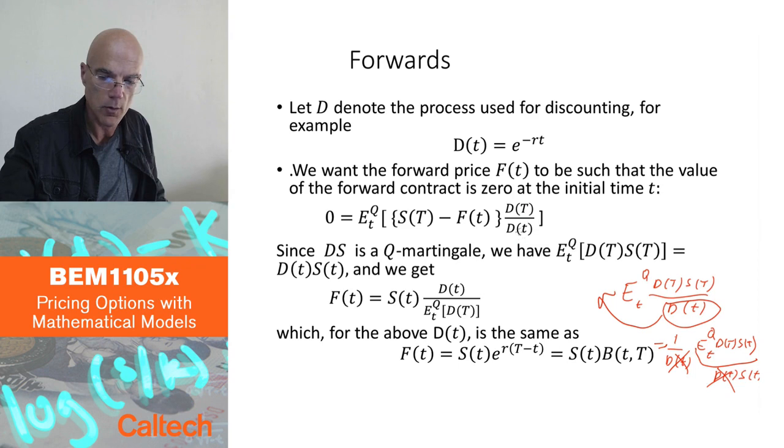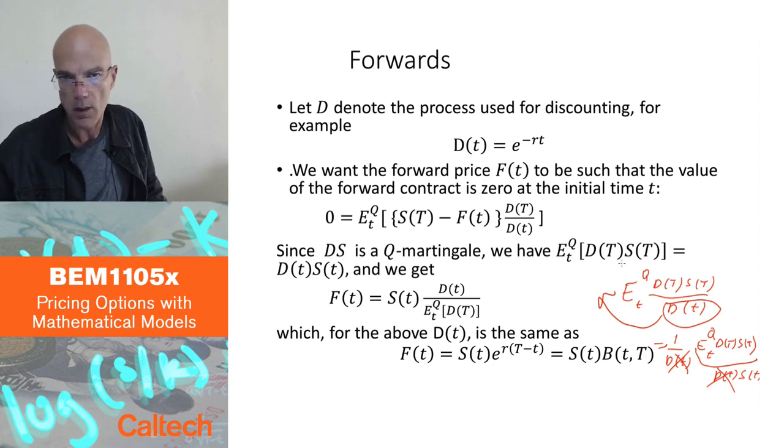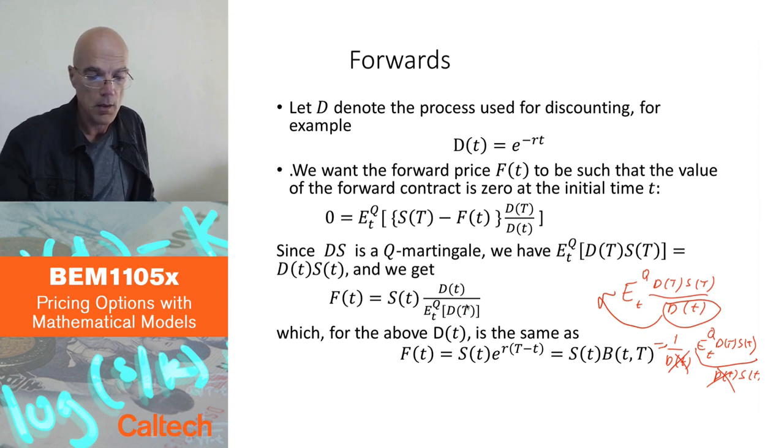and then multiply to move things to the other side with d(t) over d of capital T. So d of small t also is known, so I don't have to take expectation. The only thing that remains is expectation under Q of d of capital T because that may be random. If your discount factor is random, you take its expectation. If it's not, you don't need expectation.